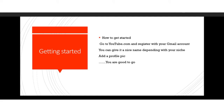So how do you get started? You simply go to YouTube.com and register with a Gmail account. Give it a nice name depending on your niche — you can use your personal name or another name depending on what you want to be vlogging about. Give it a nice profile picture and you're good to go.